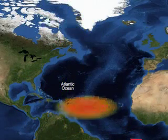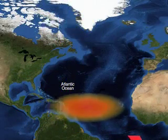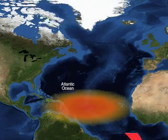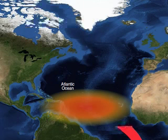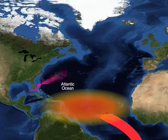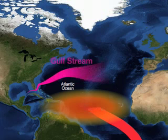Surface water at the equator is heated by the tropical sun. Trade winds created by the same heating effect push this surface water from the Gulf of Mexico towards northern Europe, also known as the Gulf Stream.